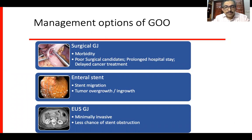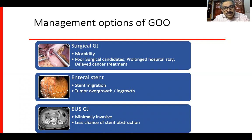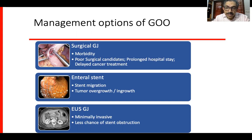Surgical gastroenterostomy has been the mainstay of treatment for gastric outlet obstruction. In patients with malignant obstruction, this procedure can have high morbidity because these patients are poor surgical candidates and may have prolonged hospital stay, which may even delay cancer treatment. The other option was enteral stent; however, it has the possibility of migration and there can be tumor ingrowth or overgrowth. EUS-GE is the new kid on the block. The procedure is minimally invasive, there is less chance of stent obstruction. For benign stricture and obstruction, dilatation is a possibility; however, you need multiple sessions and there can be complications in 3–7% of patients.